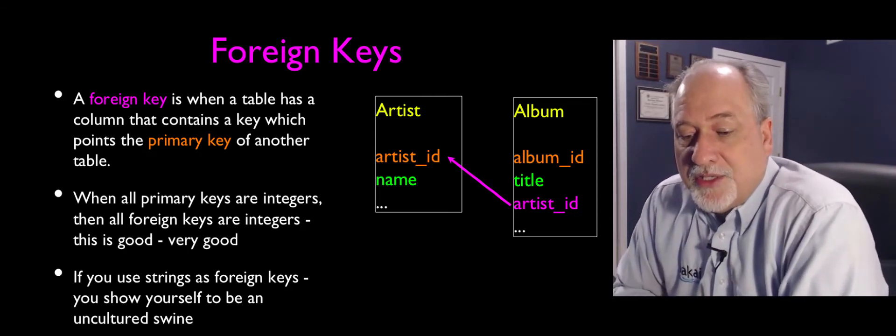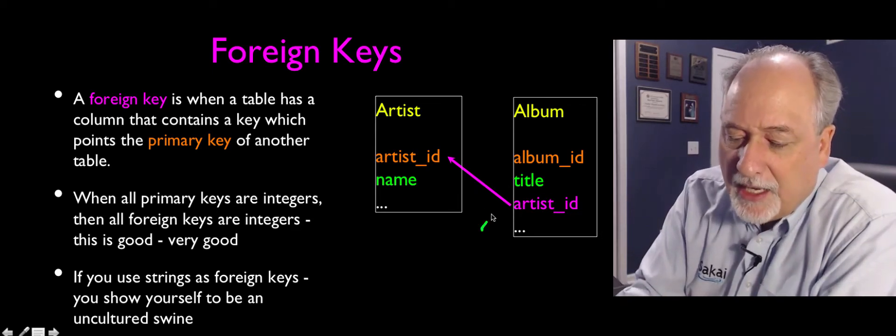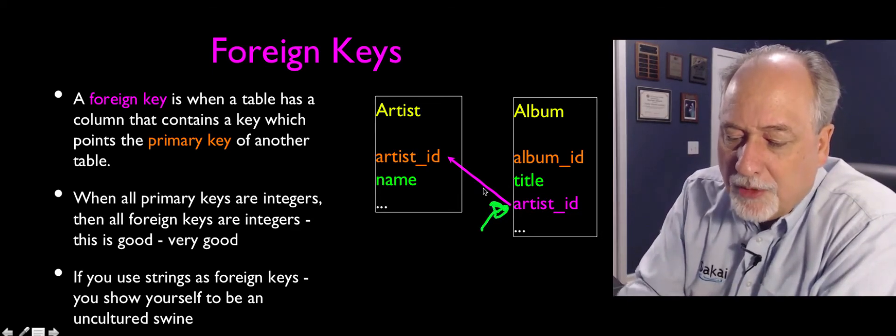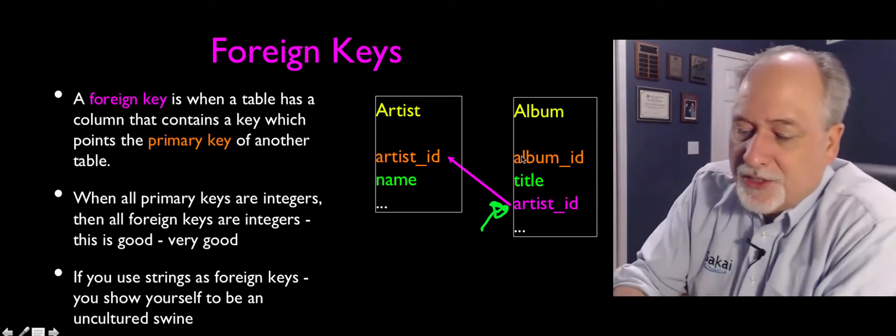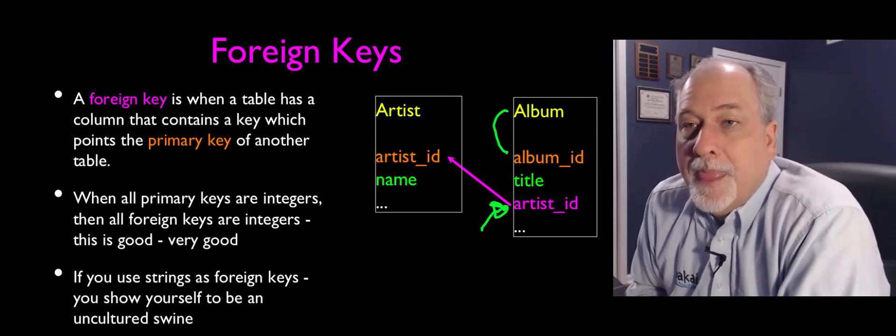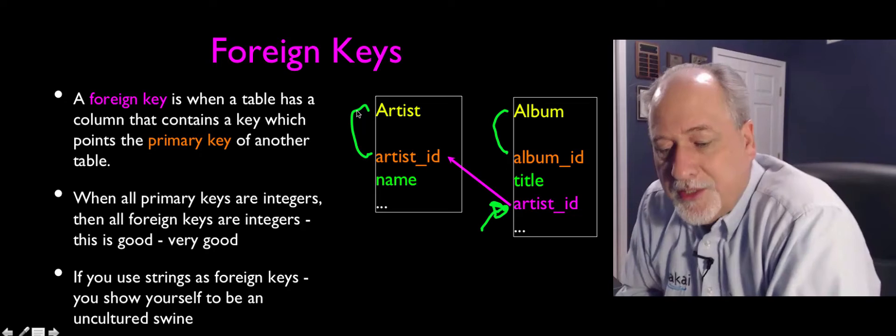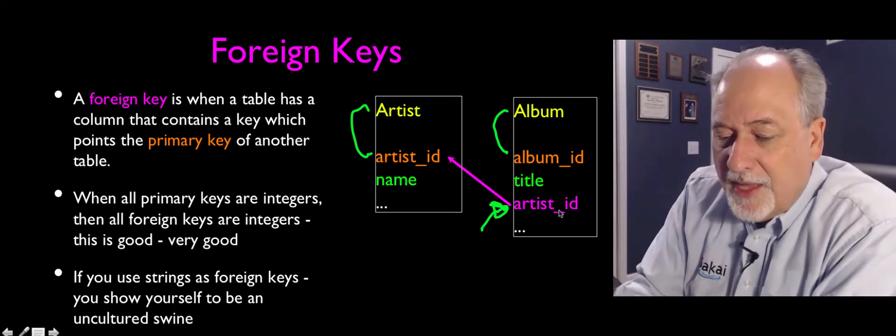Now a foreign key is the way we model these arrows. And a foreign key has a start and an end. And so if album belongs to artist, we have to add a column to the album table called artist ID. So if there's a column called album ID in the album table, that's its primary key. Artist ID has a primary key in artist.